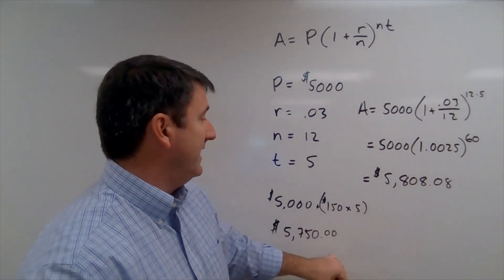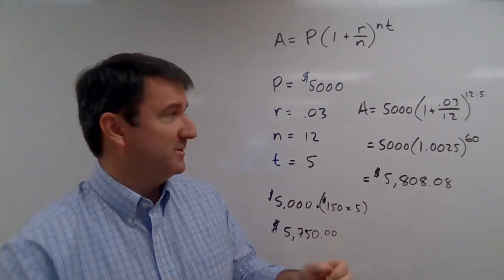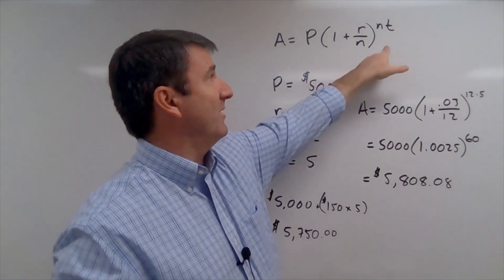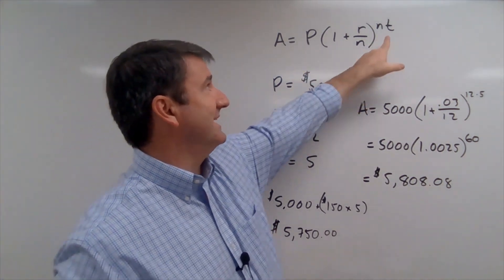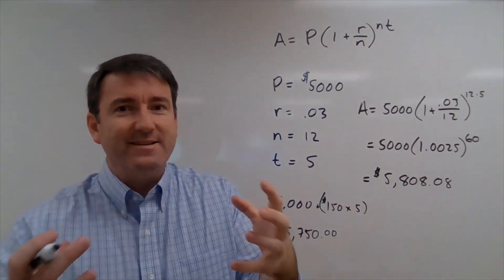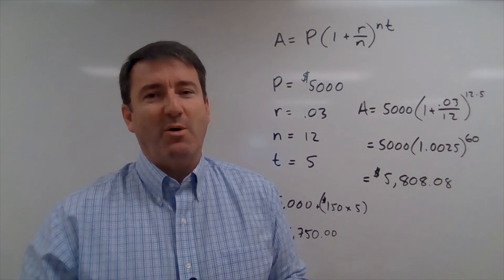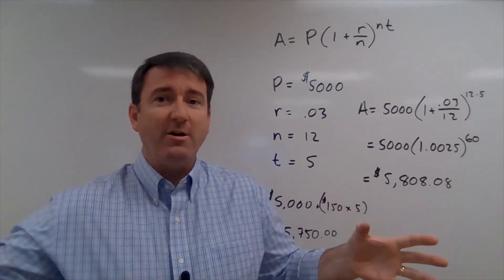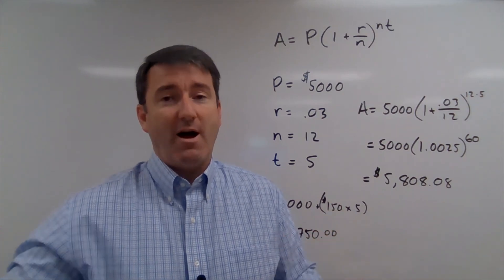And that's why financial managers will tell you that the most important part of this compound interest formula is that T. The T is the most powerful number. It's in the exponent. And so the longer you can let your money sit in an investment, the better off you're going to be.